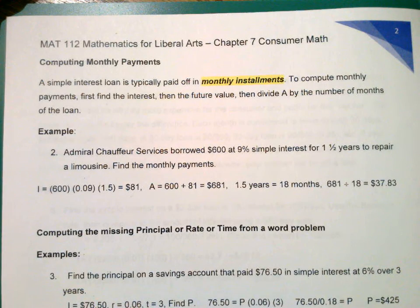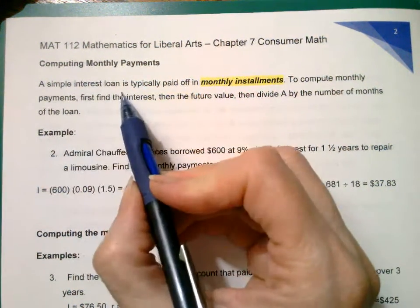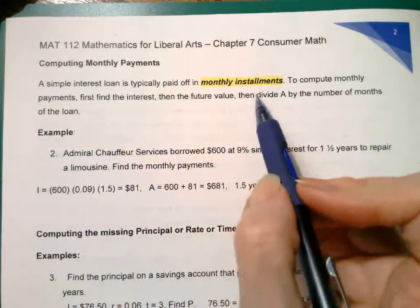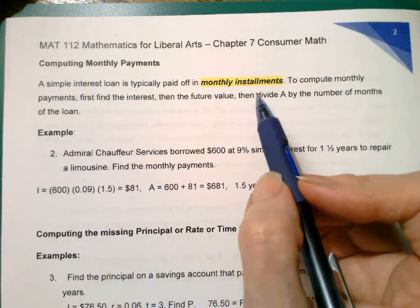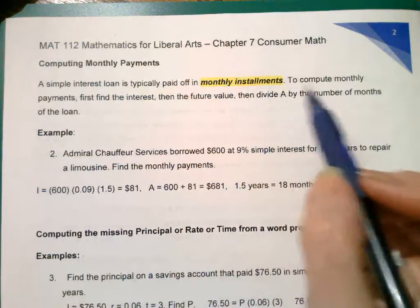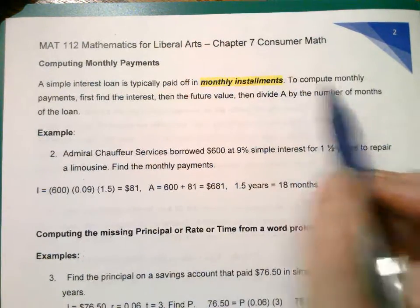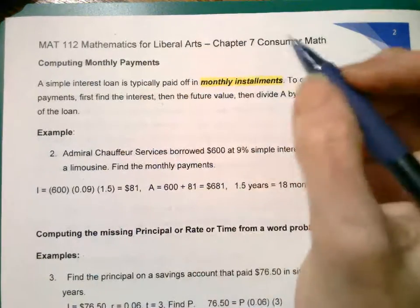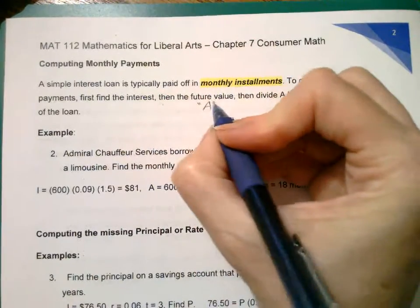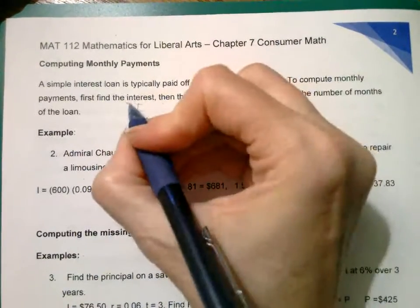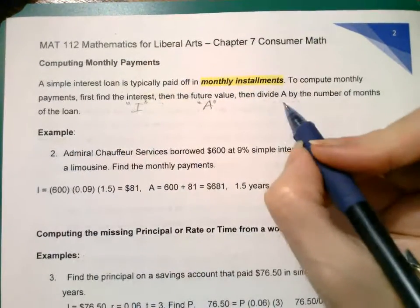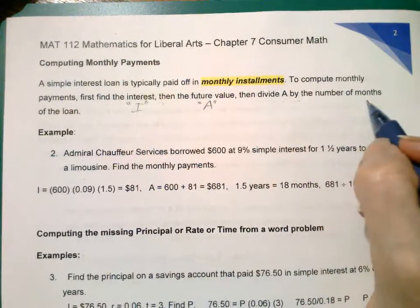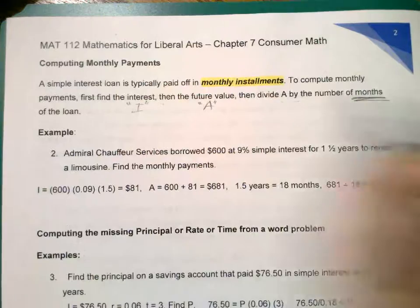Page 2 of Section 3 of Chapter 7, Computing Monthly Payments. A simple interest loan is typically paid off in monthly installments or monthly payments. To compute monthly payments, first find the interest, then the future value, then divide A or future value by the number of months in the loan.